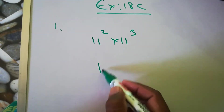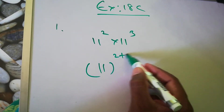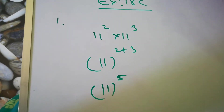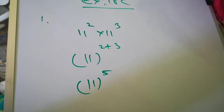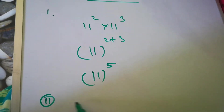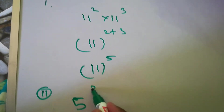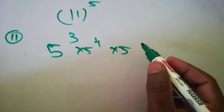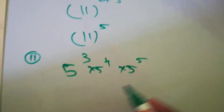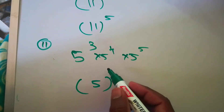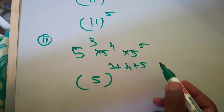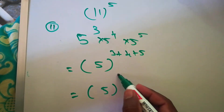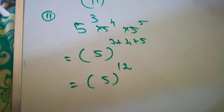So 11^2 times 11^3 — since it's multiplication, the power is plus. So 11^(2+3) = 11^5. The next question: 5^3 times 5^4 times 5^5. You can write 5^(3+4+5). That's 3+4=7, and 7+5=12, so the answer is 5^12.